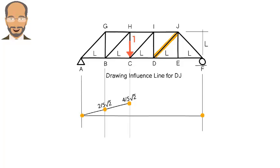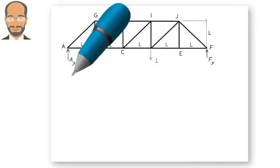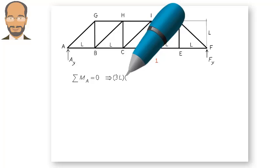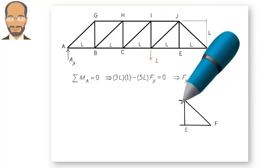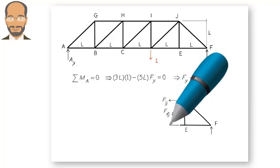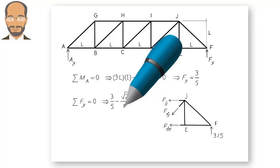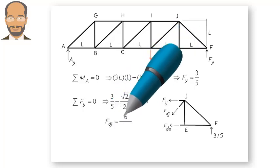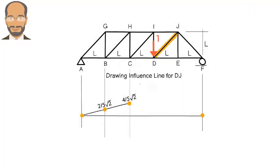We then place the unit load at D and determine FDJ. Now the graph evolves into this.